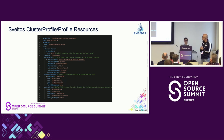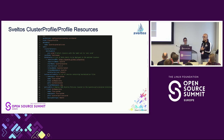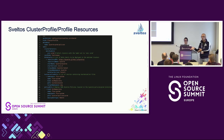Finally there is the policyRef section where you tell Sveltos the location of a bunch of YAML or JSON Kubernetes resources to take and deploy. In this case we are using Flux, but if you don't want a GitOps approach you can also put those YAML and JSON in a ConfigMap or Secret in the management cluster, and Sveltos will reference it and deploy the content.